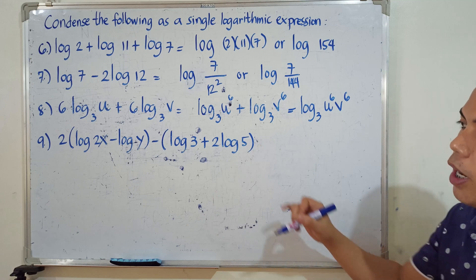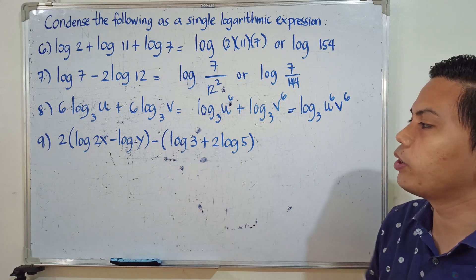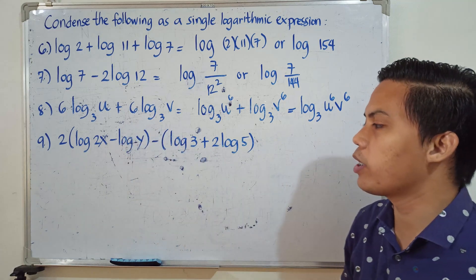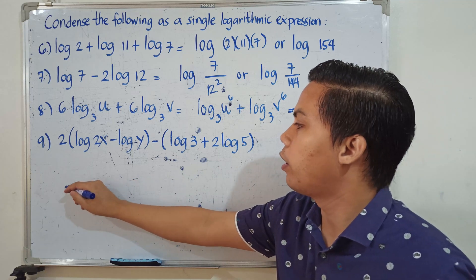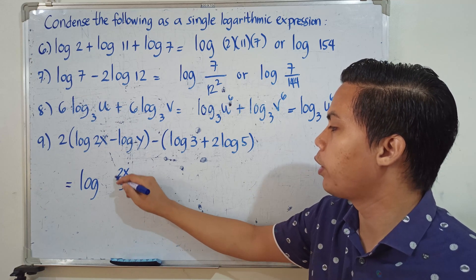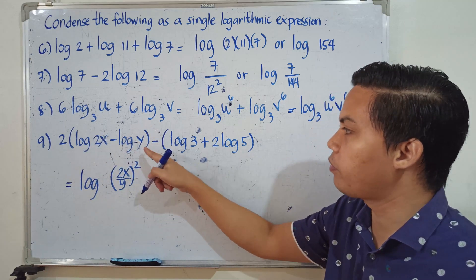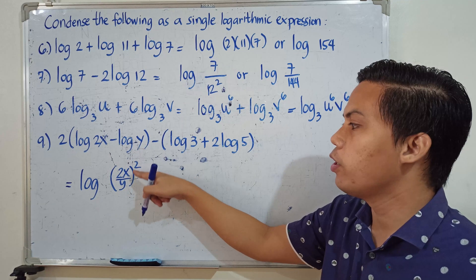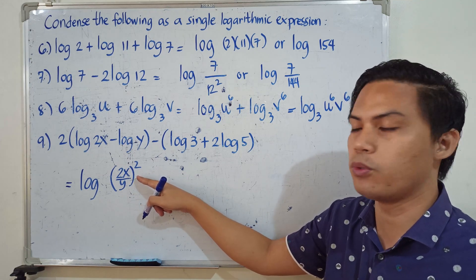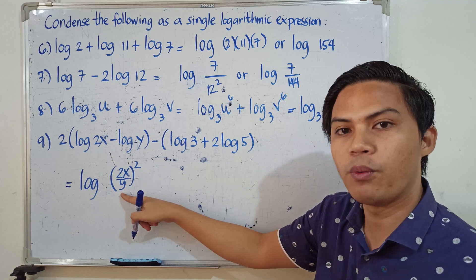Number 9 is a longer expression: 2 times the quantity of the logarithm of 2x minus the logarithm of y, minus the quantity of the logarithm of 3 plus 2 times the logarithm of 5. First, we handle the first parenthesis. Since the operation is subtraction, we apply the quotient rule: logarithm of 2x over y. Then we raise it to the power of 2 — the numerical coefficient outside the parenthesis — giving logarithm of 2x over y, all raised to 2.